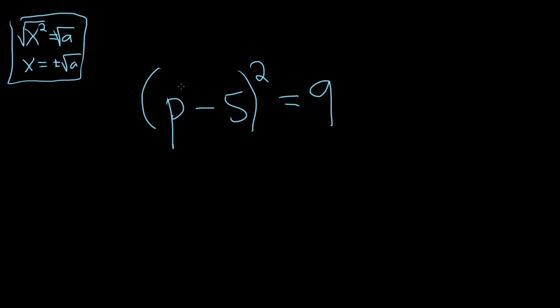So here, this p minus 5 thing is pretty much our x. So we'll start by taking the square root of both sides. So p minus 5 squared equals the square root of 9.